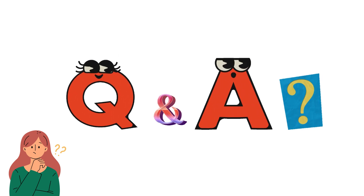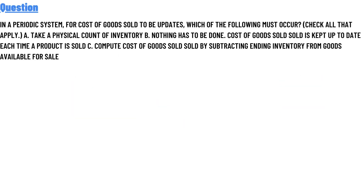Today's question is: in a periodic inventory system, for cost of goods sold, which of the following must occur? Check all that apply. Option A: take a physical count of inventory. Option B: nothing has to be done — cost of goods sold is kept up to date each time a product is sold.